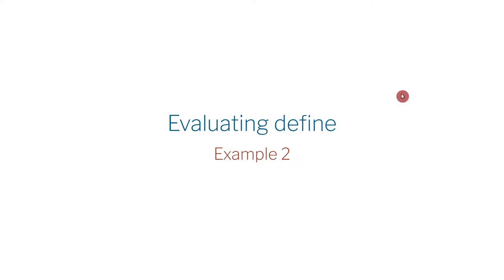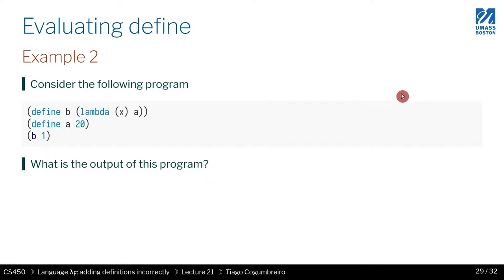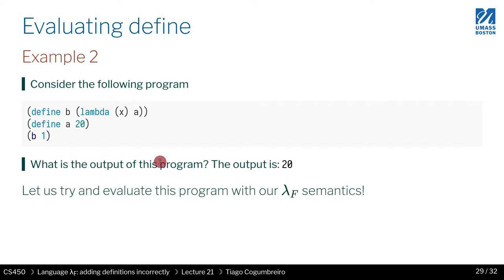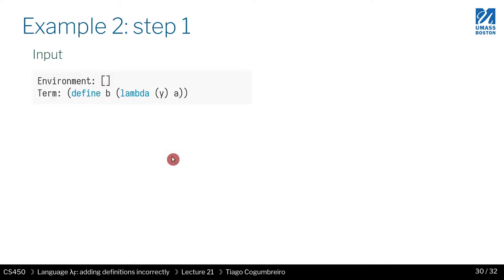Now let's look at example two. What we do is something very simple — we just reorder the two instructions. First we define b, then we define a, and finally call b. Try to copy paste this into Racket, run it, and look at the output. The output is the same: 20. Now let's see if our semantics, lambda f, is still able to reproduce this behavior.